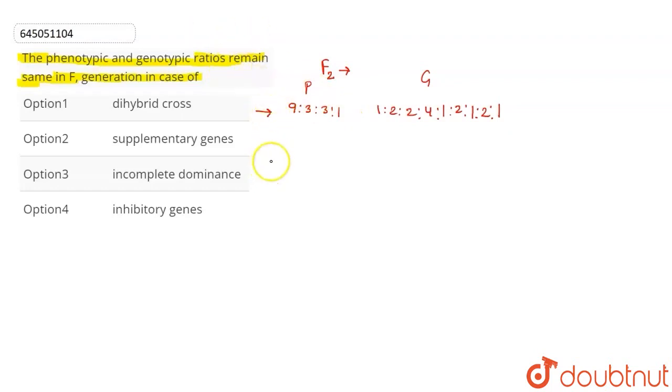Next, we have supplementary genes. Supplementary gene in case, the phenotypic ratio is 9, 3 and 4, but the genotypic ratio is the same as the dihybrid cross.